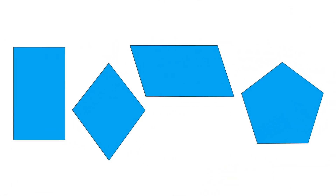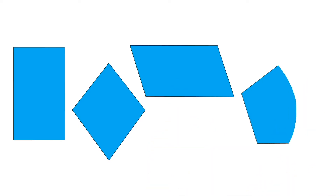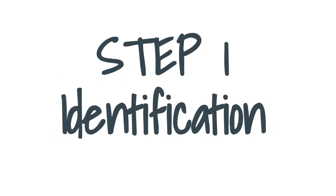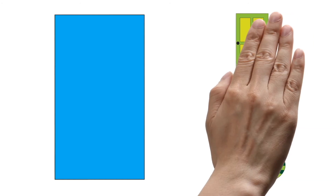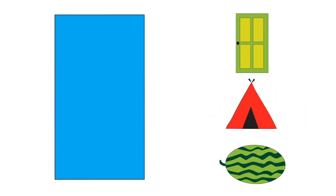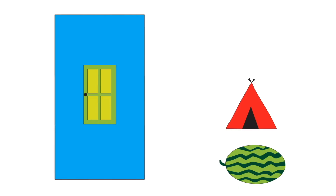Let's learn the shapes rectangle, rhombus, parallelogram and pentagon. This is a rectangle. Can you see an object that is shaped like a rectangle? The door is shaped like a rectangle. Rectangle.